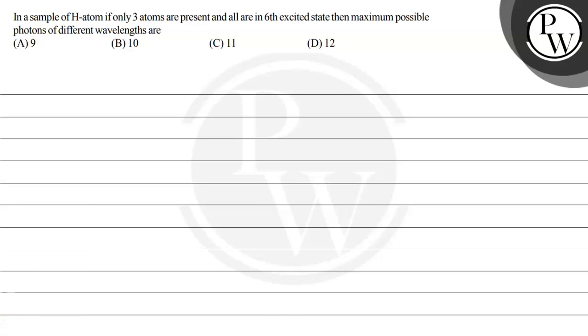Let's read this question. In a sample of hydrogen atoms, if only three atoms are present and all are in the sixth excited state, then the maximum possible photons of different wavelengths are - and we have four options over here. So let us solve this question.